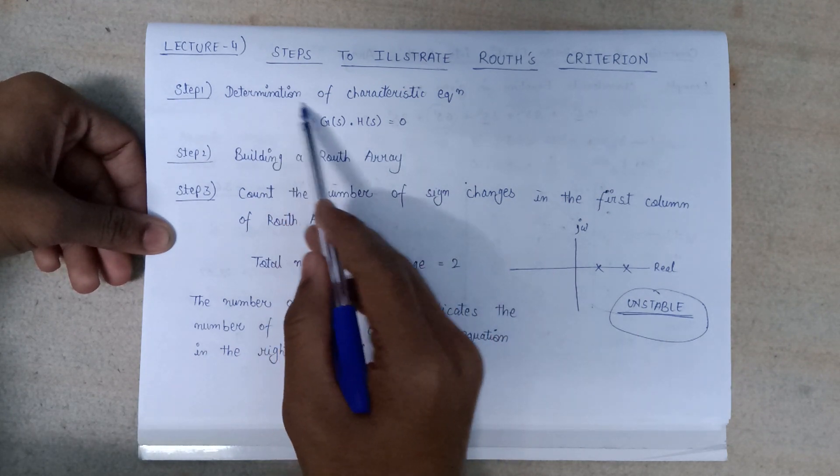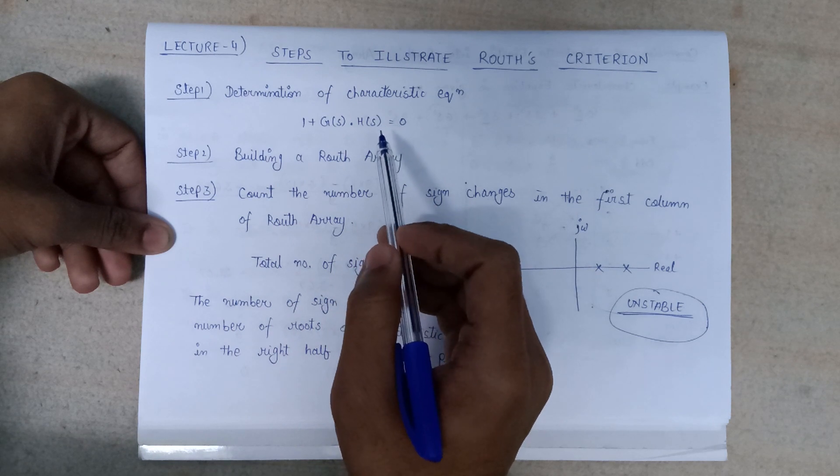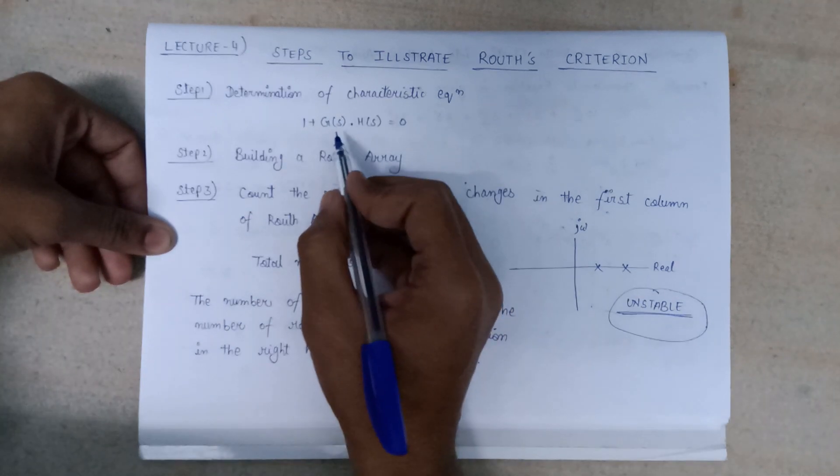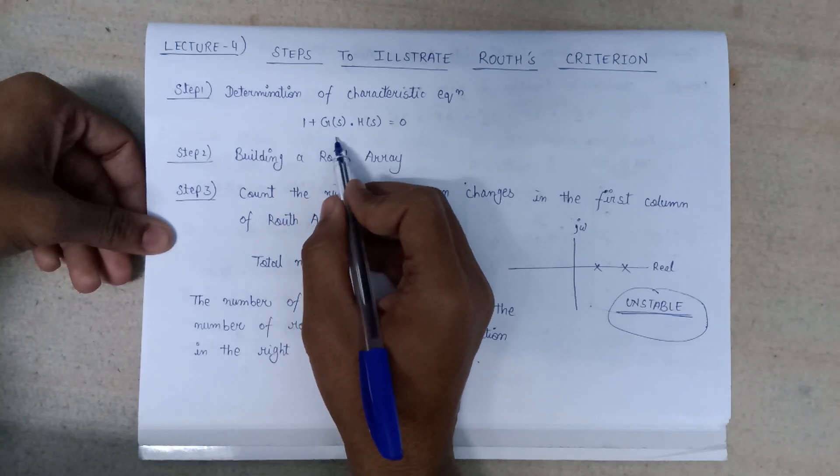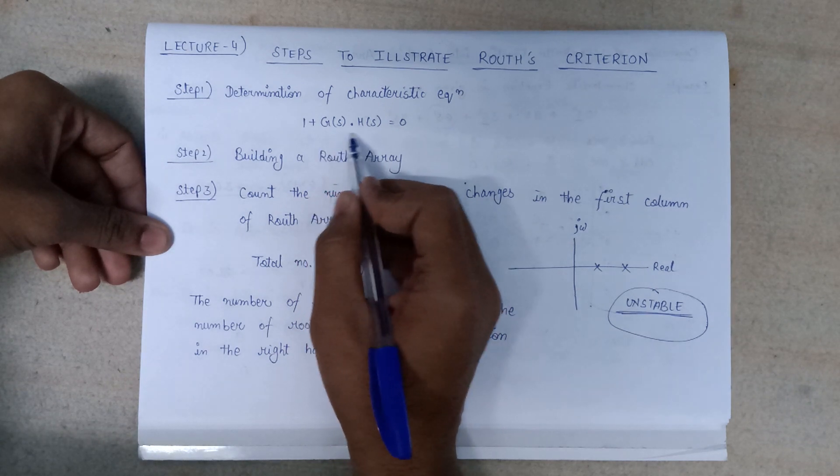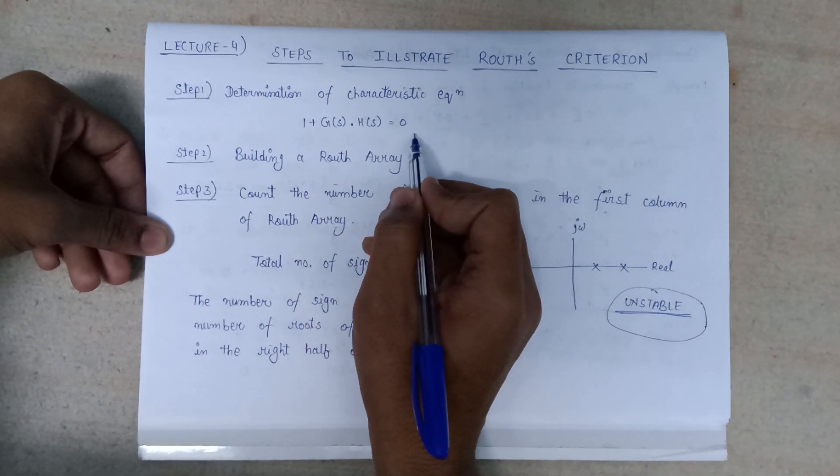First of all, we have to determine the characteristic equation which is given in the question. The characteristic equation will always be present in the form 1 plus G(s) into H(s) equals 0.